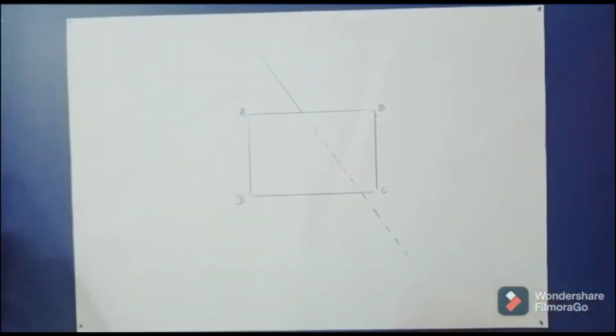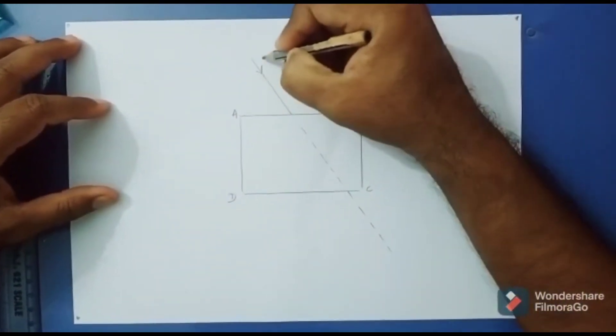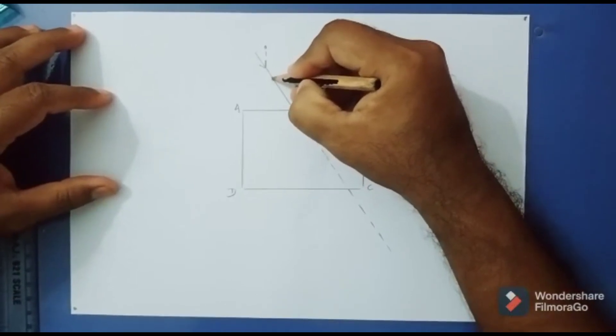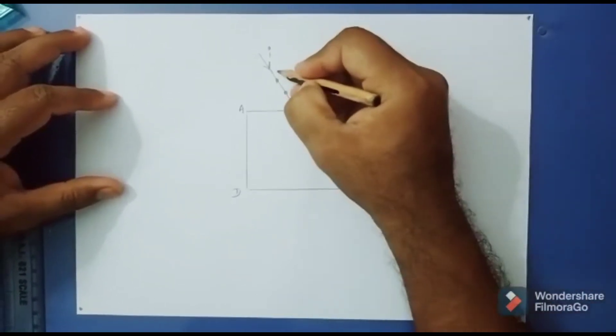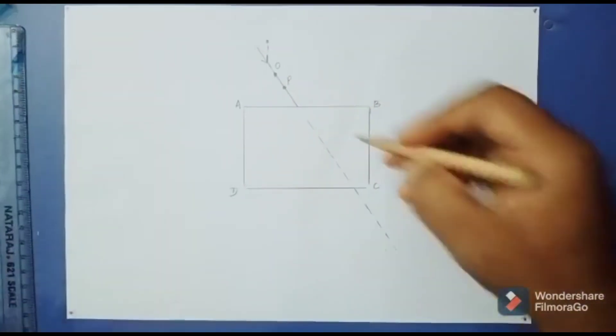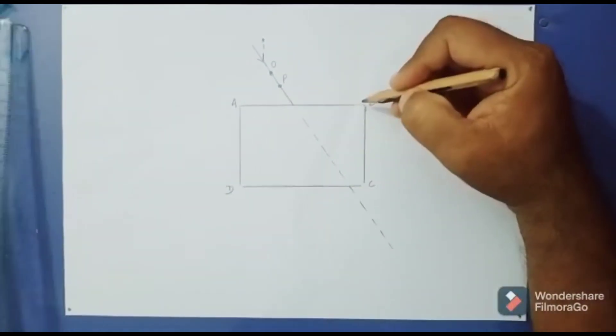Remove the scale. Let us consider this as an incident ray. Fix two pins over this incident ray and let us take them as O and P. Now, since this incident ray is touching AB side, let us draw a normal to AB.